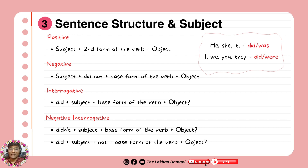In the negative, you are going to use the past form as a helping verb, but you cannot use the verb in its second form. Here we use only the base form — the first form of the verb. The structure is: subject + did not + first form of the verb + object. For example, I didn't go to school. I did not go to school.